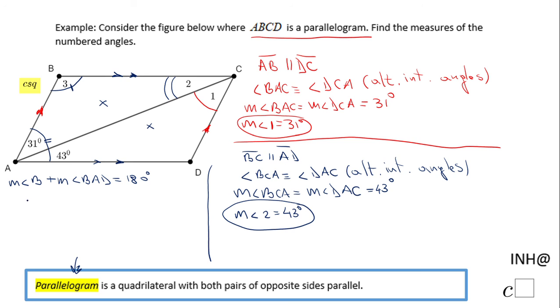So we're going to have here the measure of angle B, which is angle 3. And now how much is BAD? BAD is 43 plus 31, which will be 74.